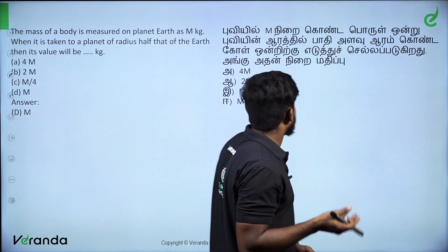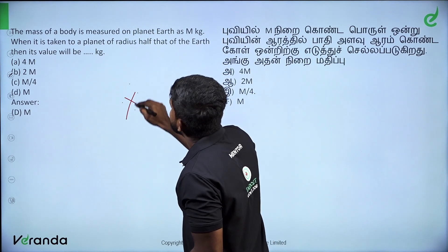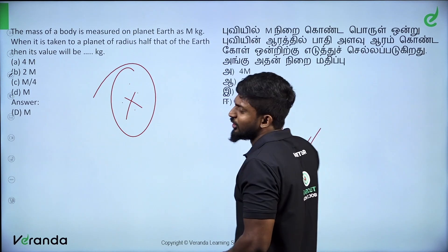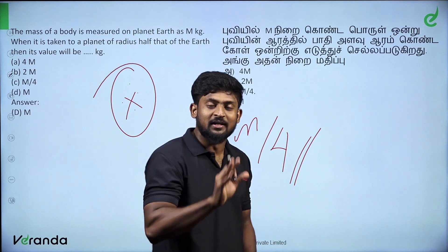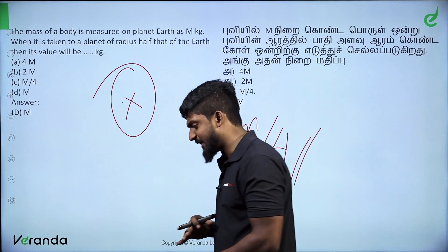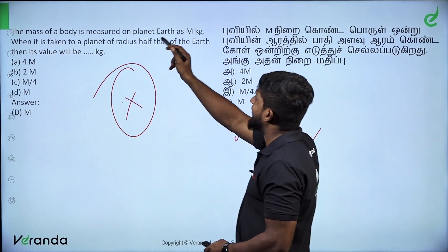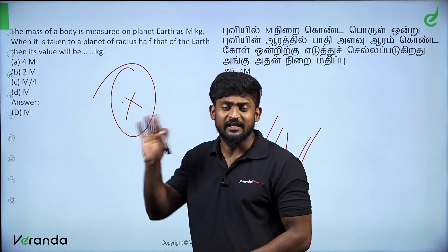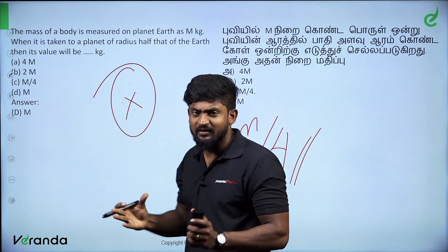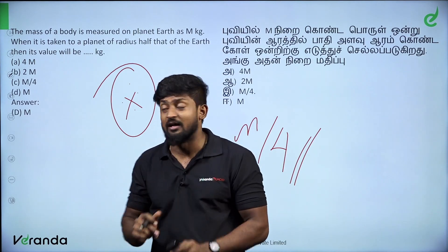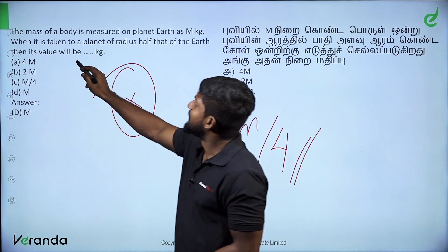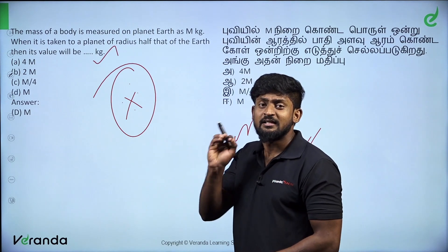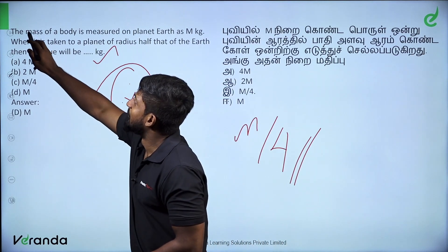The mass of a body is measured on planet Earth. This is very important. The answer is that mass remains the same regardless of location. If you take an object of 60 kg or 70 kg and move it to a planet of radius half that of Earth, the mass remains the same.